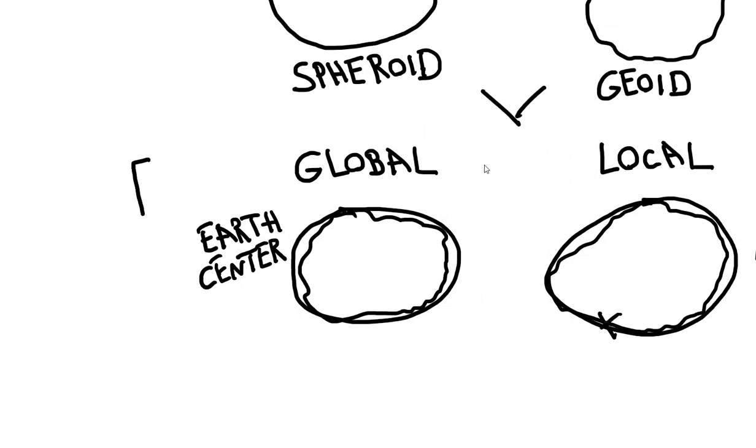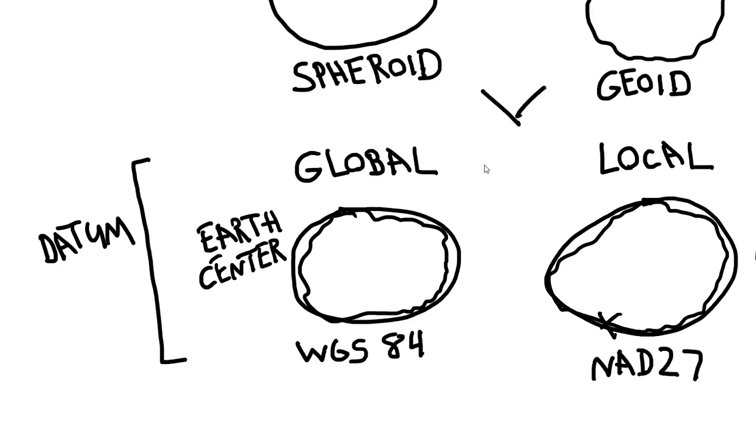So this combination of the spheroid and the geoid at either a global or local location is referred to as a datum. So we're finally at our first definition. So a datum is that combination of the spheroid and the geoid. And a couple examples of datums are at a global scale, WGS84, or a local scale could be called NAD27. So those are two datums that you might see referenced as we continue to move forward.